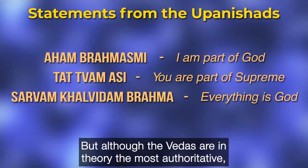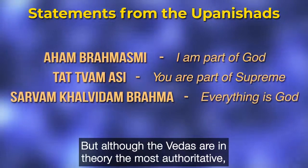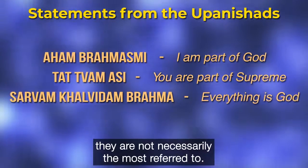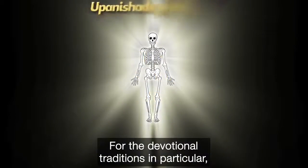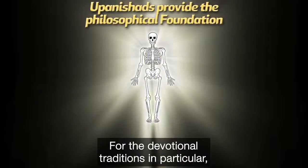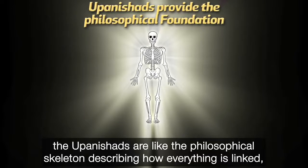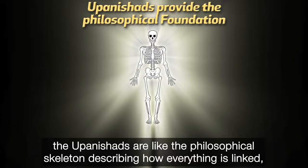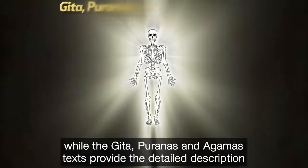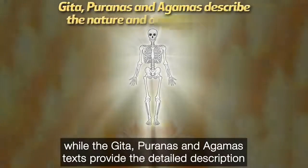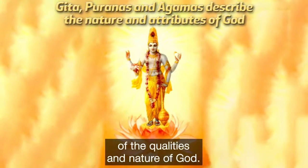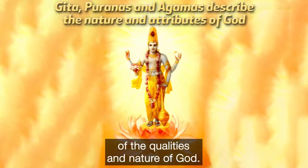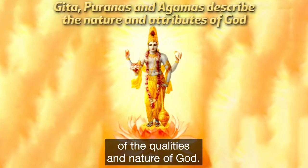Although the Vedas are in theory the most authoritative, they are not necessarily the most referred to. For the devotional traditions in particular, the Upanishads are like the philosophical skeleton describing how everything is linked, while the Gita, Puranas and Agama texts provide the detailed description of the qualities and nature of God.